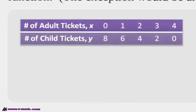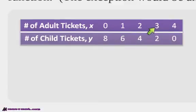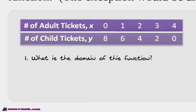Let's talk about this example. We've got the number of adult tickets sold and the number of child tickets sold. Here you bought zero adult tickets and eight kids, or one adult with six kids, two adults and four kids, three adults and two kids, and four adults with no kids. What is the domain of this function? Remember, the domain is just the x values. So it's going to be zero, one, two, three, four.